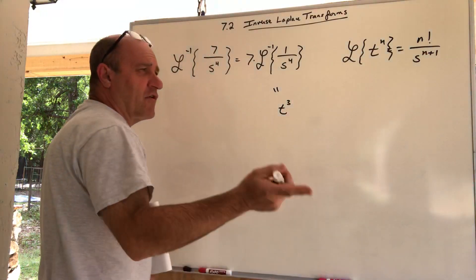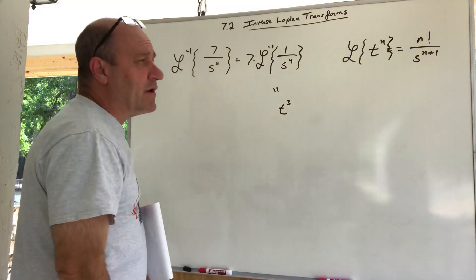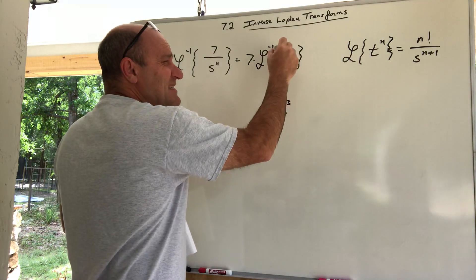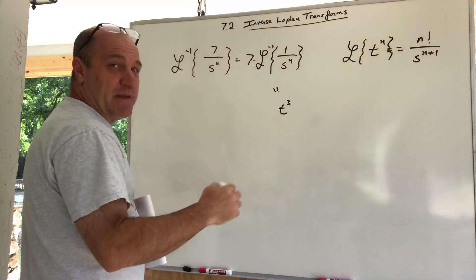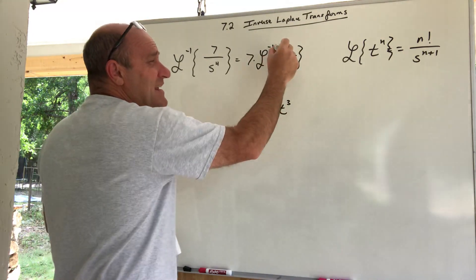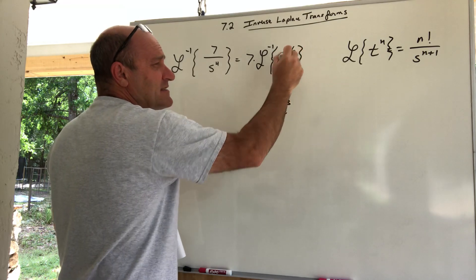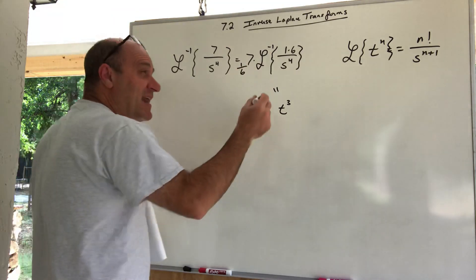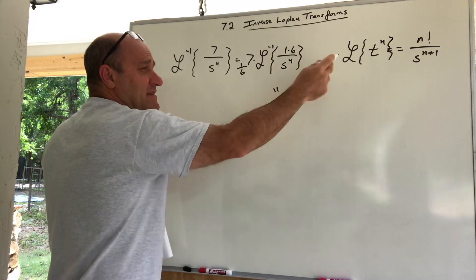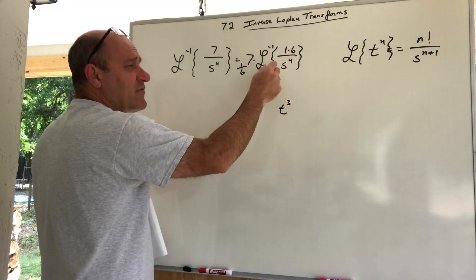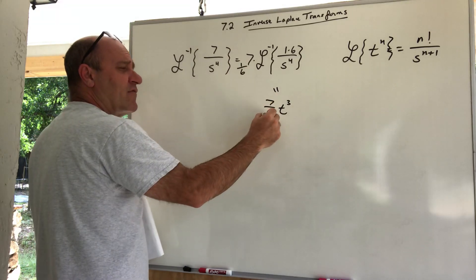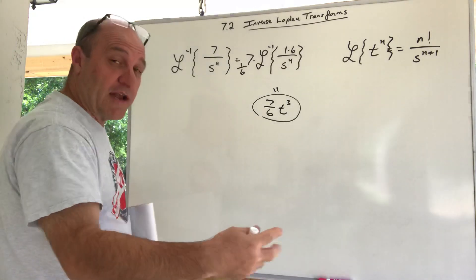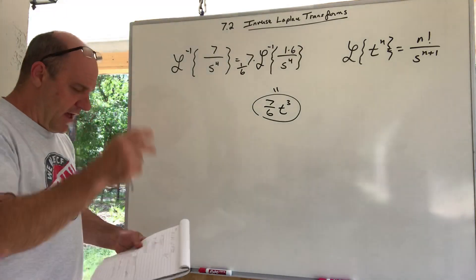For t³ I need a 3! = 6 in the numerator, but I only have a 1 there. So I multiply inside by 6 and compensate out front by multiplying by 1/6. That gives (7/6) times the inverse Laplace of 6/s⁴, which is (7/6)t³. That's how you manipulate to match the table form.